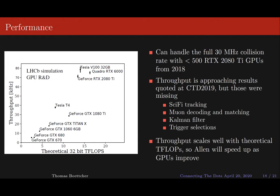Throughput scales well with theoretical teraflops, so as GPUs improve, Allen will continue to improve. Allen also scales well with generational improvements — for example, the Tesla T4 is a different generation card and has better performance per teraflop than older cards. So Allen will make use of both incremental and generational improvements in GPU performance.